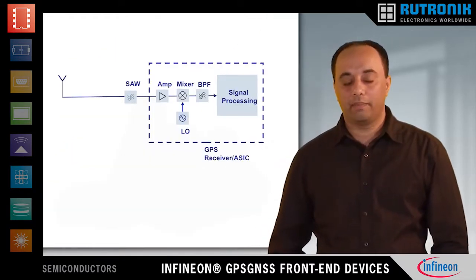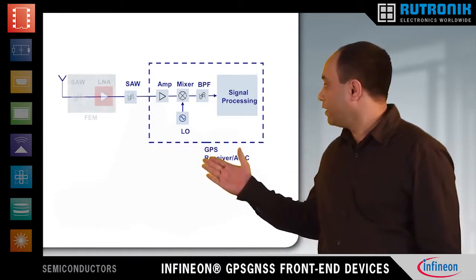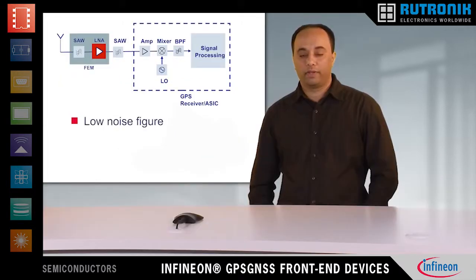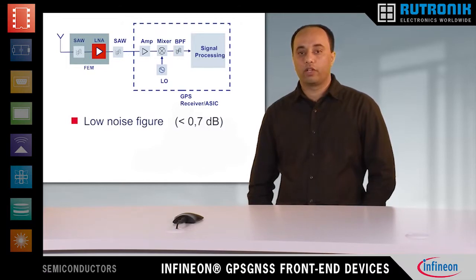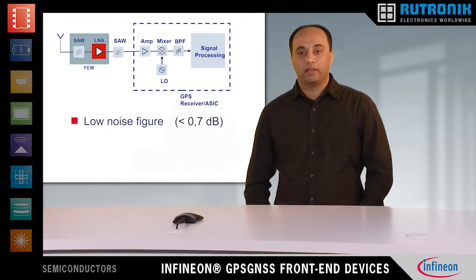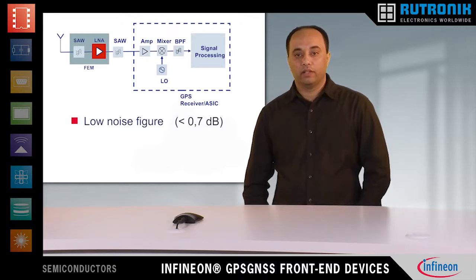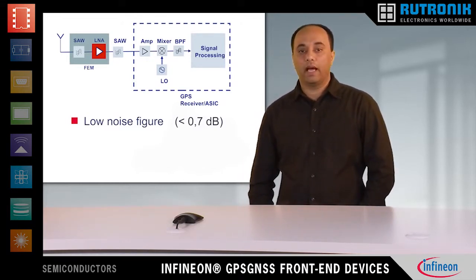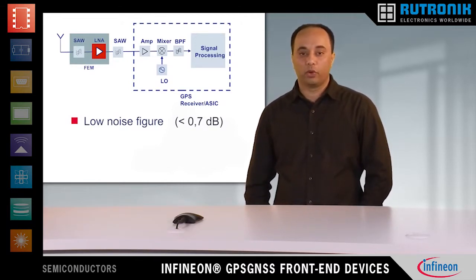All these challenges can be overcome in the system by using an LNA or module. The LNA or module should have a low noise figure. Choosing the LNA or module with a low noise figure lowers the noise figure of the complete system, which improves system sensitivity and also reduces the time to first fix. Generally, LNAs for GPS applications have 15 to 20 dB of gain and a noise figure lower than 1 dB.